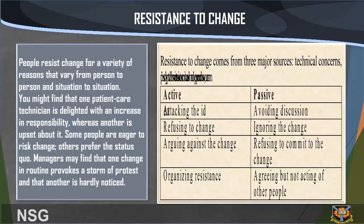Managers may find that one change in routine provokes a storm of protest and that another is hardly noticed. Resistance to change comes from three major sources: technical concerns, psychosocial needs, and threats to a person's position and power. Resistance can be active or passive. Active resistance includes attacking the idea, refusing to change, arguing against the change, and organizing resistance. Passive resistance includes avoiding discussion, ignoring the change, refusing to commit to the change, and agreeing but not acting.